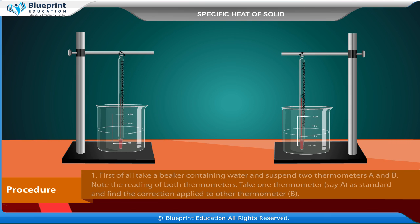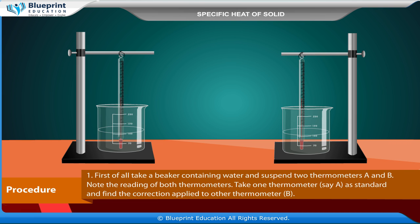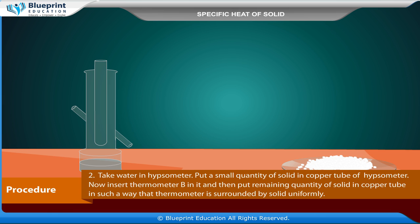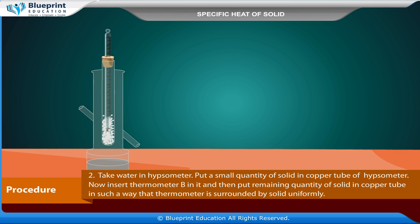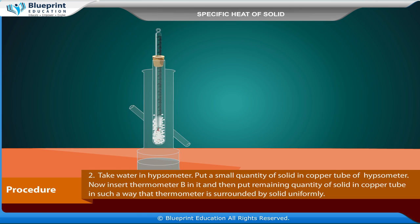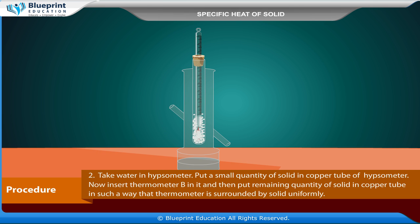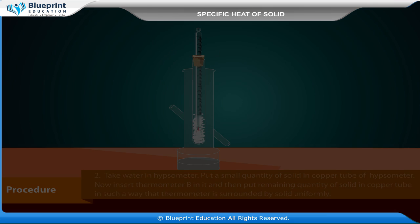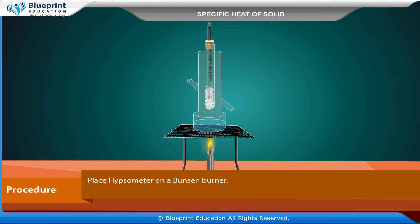Procedure: first, take a beaker containing water and suspend two thermometers A and B. Note the reading of both thermometers. Take thermometer A as standard and find the correction to be applied to thermometer B. Take water in the hypsometer. Put a small quantity of solid in the copper tube of the hypsometer, insert thermometer B in it, then put the remaining solid so that the thermometer is surrounded by solid uniformly. Place the hypsometer on a Bunsen burner.